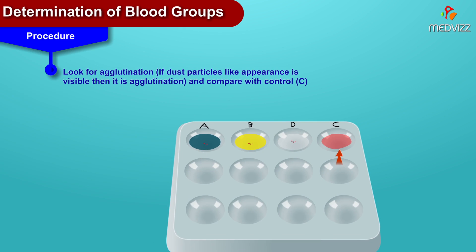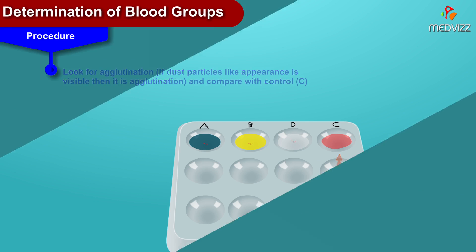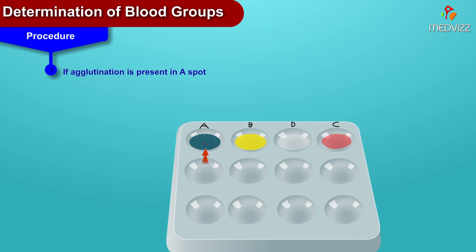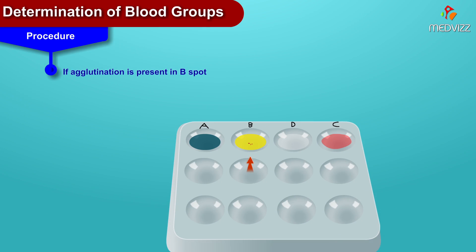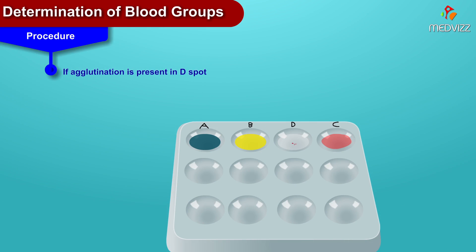If a dust-particle-like appearance is visible, then it indicates agglutination. Now, the inferences after observation: if agglutination is present in spot A, then the blood group has A antigen. If agglutination is present in spot B, then the blood group has B antigen.